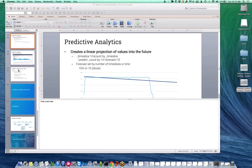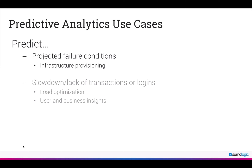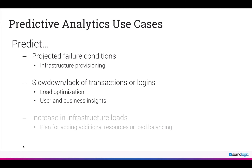Here are a few popular use cases for predictive analytics. You can project failure conditions such as low or zero disk space, and schedule real-time alerts to provision your infrastructure before outages occur. You can optimize load balancing configurations or gain user and business insights by monitoring the slowdown or lack of transactions or logins to your service. You can also plan for additional resources or configure load balancing to handle sudden increases in infrastructure loads.